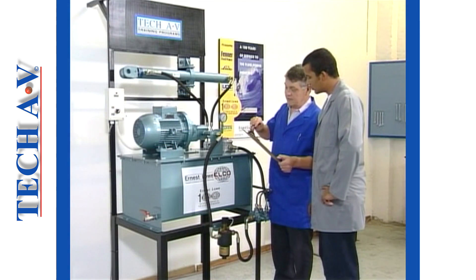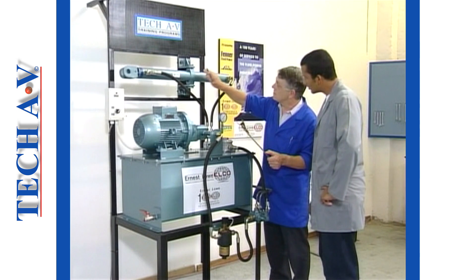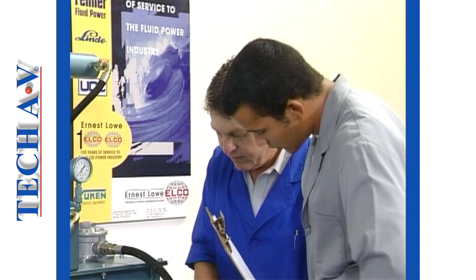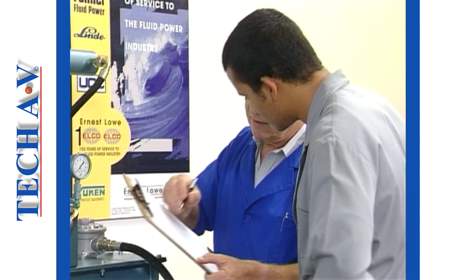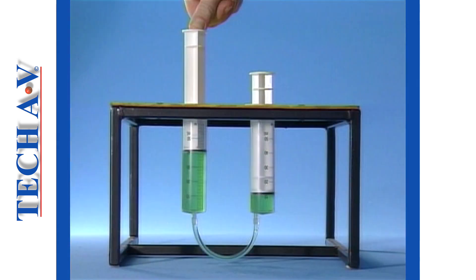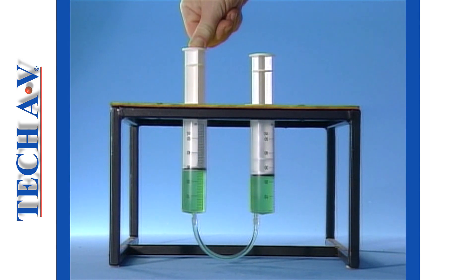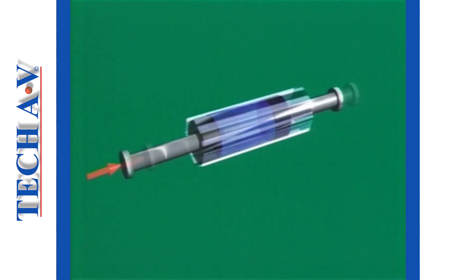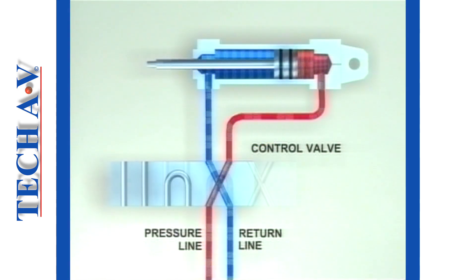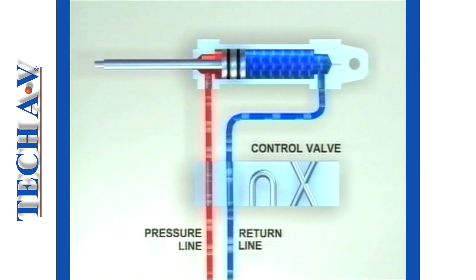Your ability to attend to basic faults and interpret the details on circuit diagrams will be of great benefit to you as an operator of equipment or as a service person involved in plant maintenance. Your understanding of basic operating principles is essential for this program. Please do not proceed with this module without having first successfully completed module number one of this series.